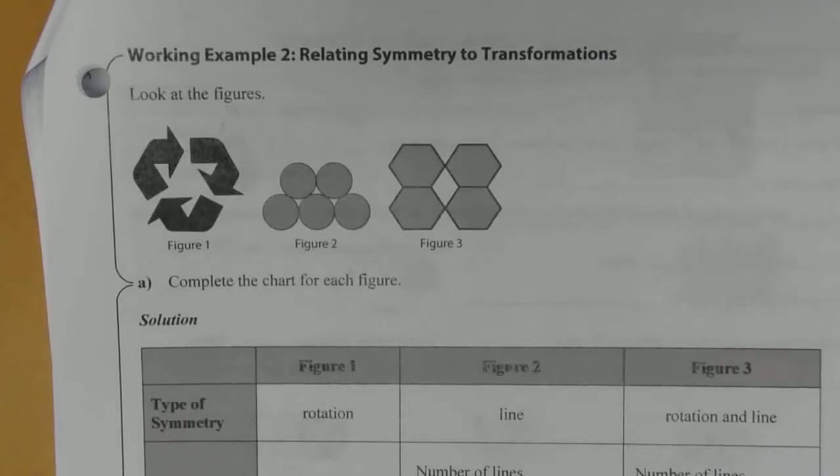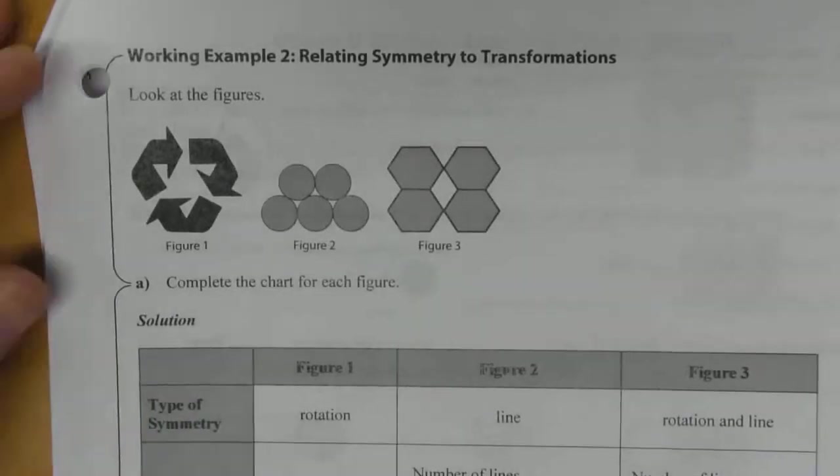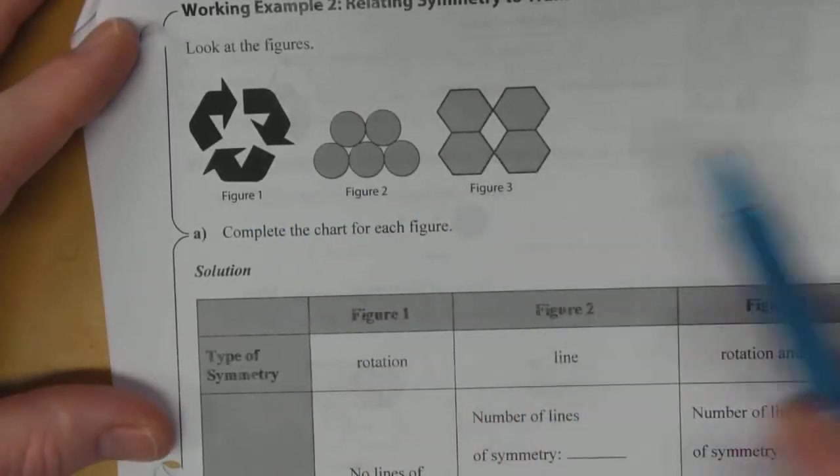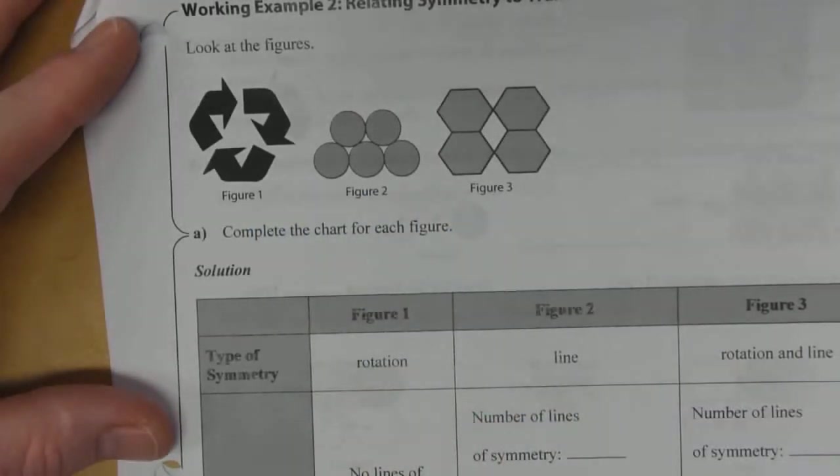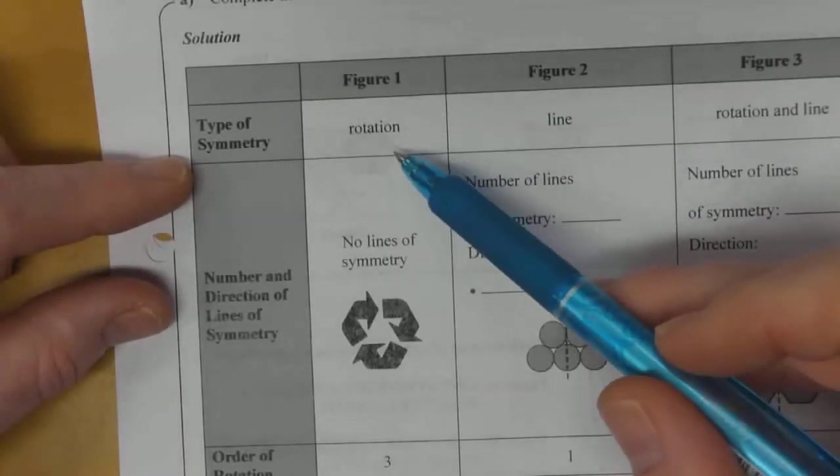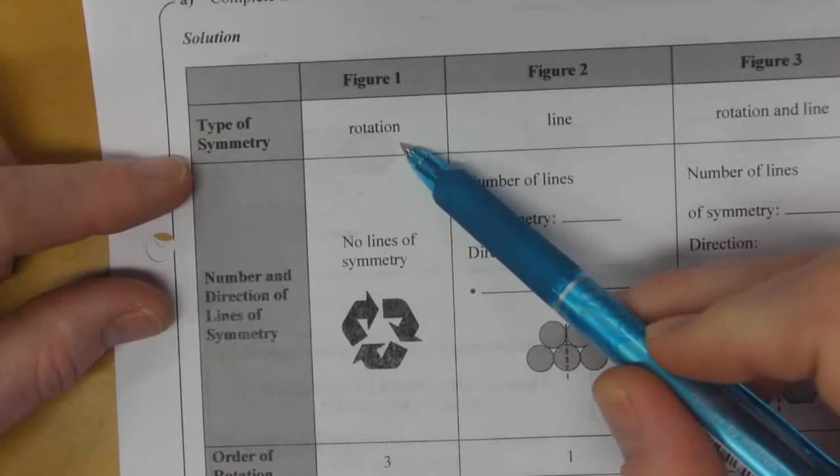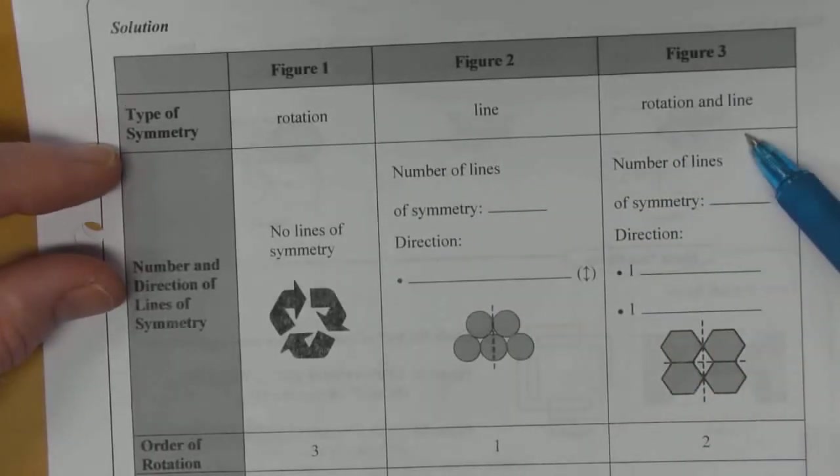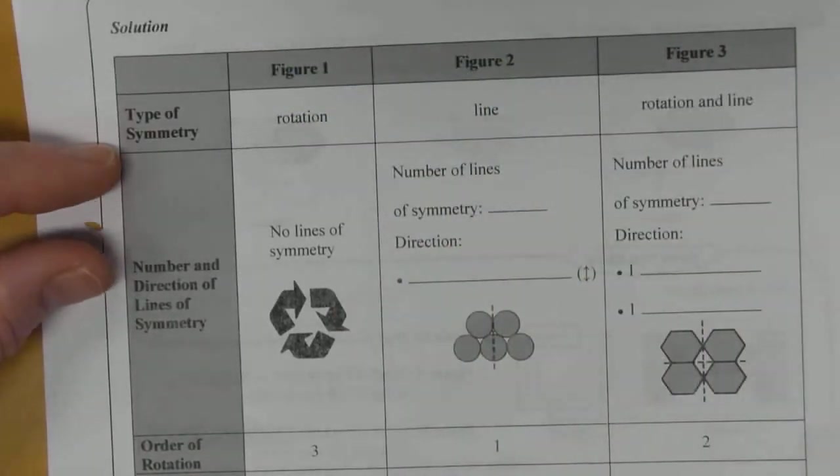Example number two: relating symmetry to transformations. Look at the figures—we've got Figure 1, 2, and 3. We're going to complete the chart for each figure, analyzing different types of symmetry: rotation, line symmetry, and both rotation and line symmetry for the three different figures.